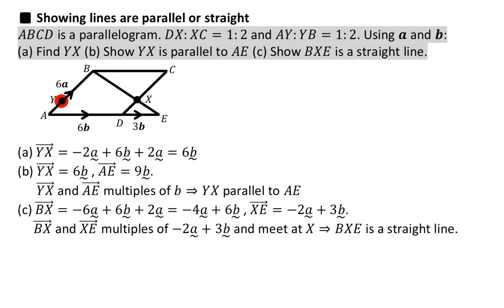And finally, to find YX. We're going to take this route here. YA is minus 2a because YA is one-third of this entire line - there's this 1 to 2 ratio - and it's going in the opposite direction of the 6a. So minus 2a plus 6b. Then this is also 2a, but positive 2a because we're going that way from D to X. So minus 2a plus 6b plus 2a. The a's cancel, so you're just left with 6b.